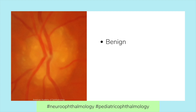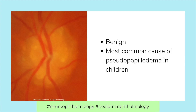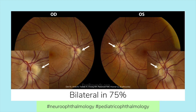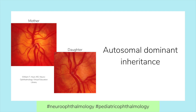They are benign but may cause visual loss and are often mistaken for true optic nerve edema. Optic Disc Drusen are the most common cause of pseudopapilledema in children. They are common, with a reported prevalence ranging from 0.34% clinically to 2% in autopsy studies. Approximately 75% are bilateral, and they are frequently inherited in an autosomal dominant pattern but also occur in isolation.